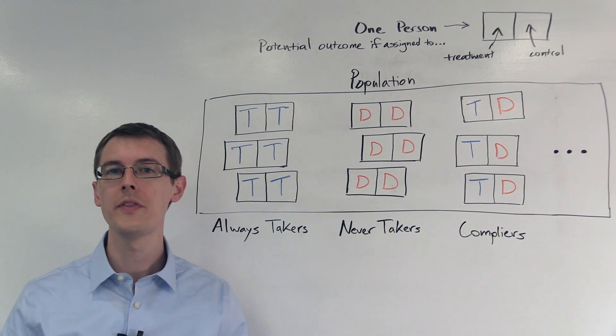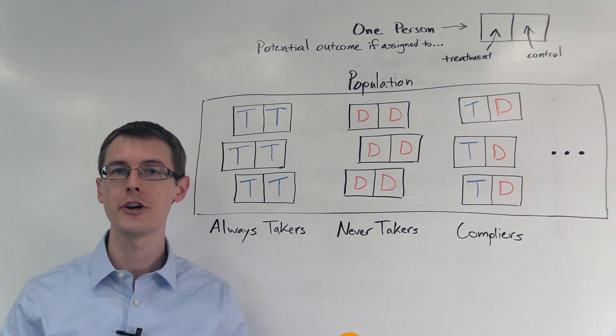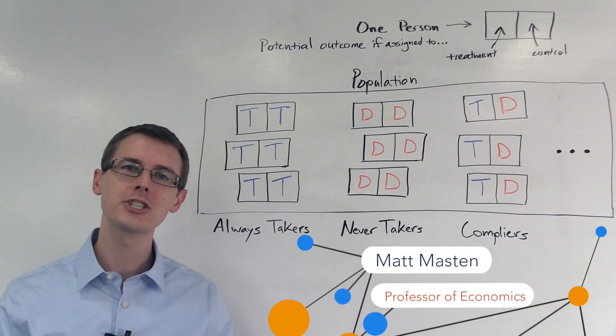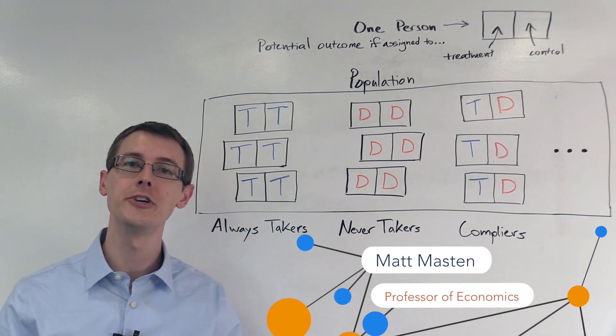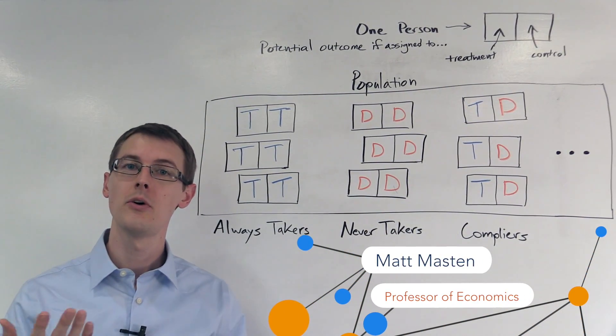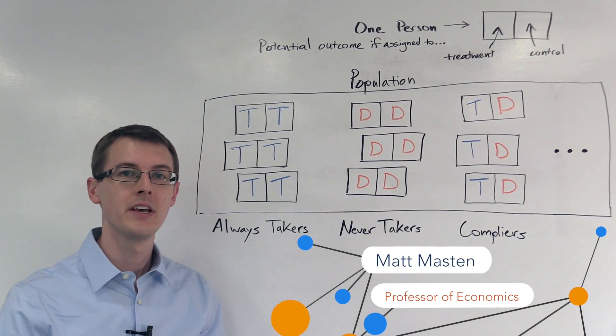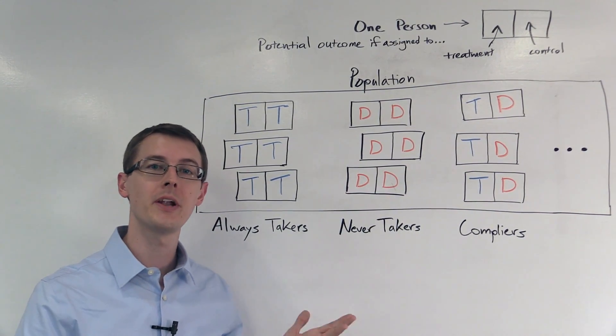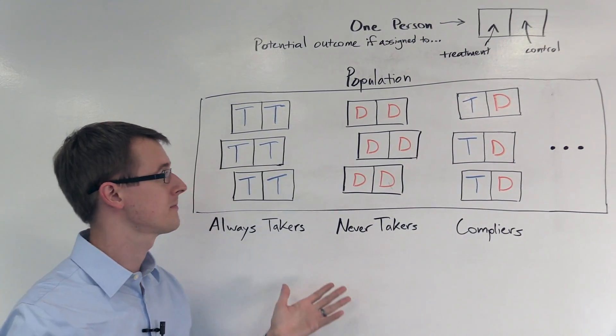So we've defined what the local average treatment effect is, but how do you actually compute it in your data set? Well, let's see. We'll start by describing our population of units.